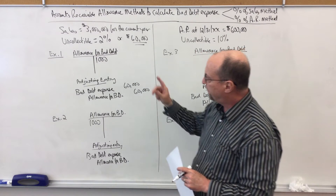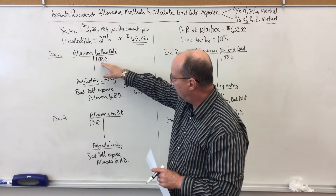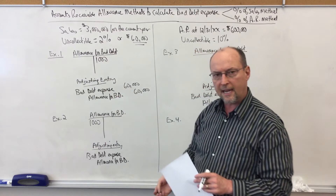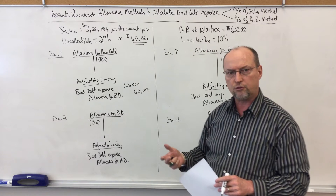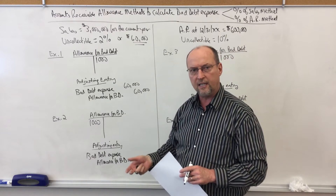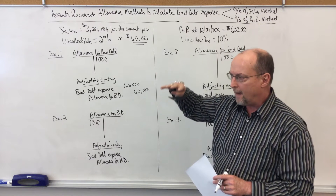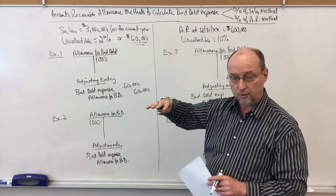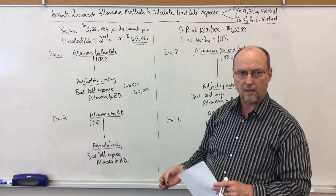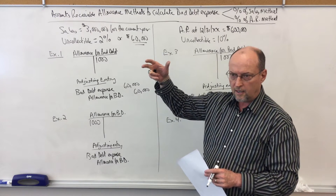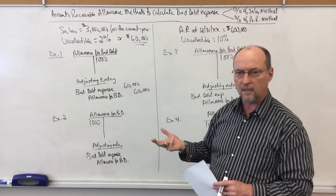Now notice in the first example, we assume that the allowance for bad debt has a one thousand dollar credit balance. On the balance sheet, we have to show accounts receivable at net realizable value — that is total accounts receivable minus the allowance for bad debt, or the allowance for doubtful accounts, equals net accounts receivable. Think of it this way: total AR minus the bad receivables equals the good receivables, what we think we're going to collect.